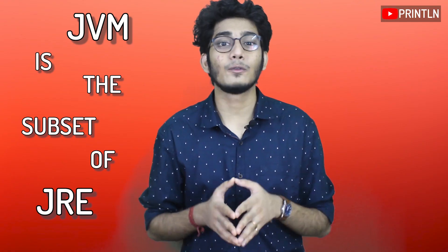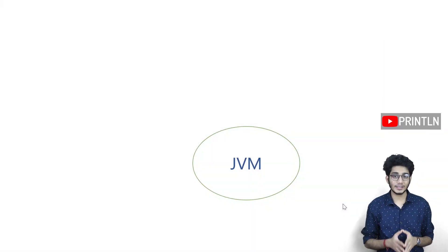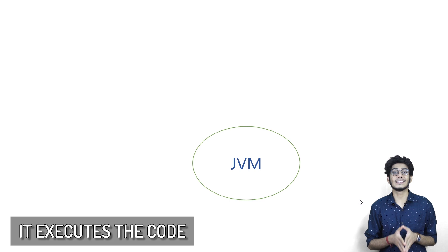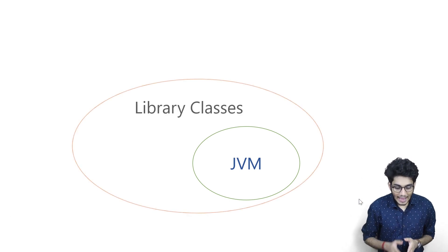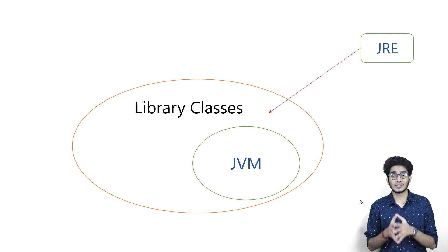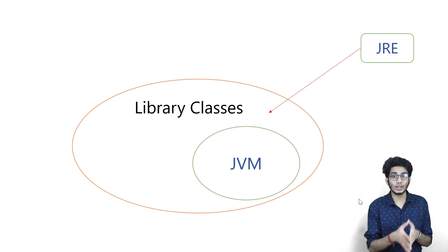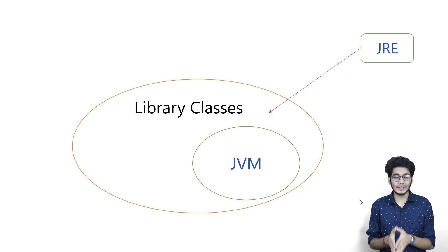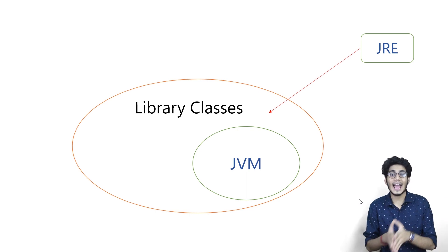Let me first distinguish between JDK, JVM and JRE. JVM is the subset of JRE. As you can see JVM is written over there. The tasks of JVM are: it loads the code that you write, it provides the runtime environment, it verifies the code and it executes the code. JRE contains the library classes — in Java we have several library classes. JRE contains all those library classes as well as JVM. JRE exists physically, but JVM doesn't exist physically — we don't have any physical version of JVM. So within JRE, we have library classes and JVM.